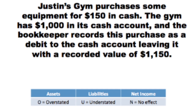The same principle holds true for liabilities as well. To practice, let's take a look at a simple transaction. Suppose that Justin's gym has $1,000 in its cash account and makes a cash payment of $150 for some equipment. However, the bookkeeper accidentally records the cash payment as a debit to cash, increasing it to $1,150 when it should have been decreased.